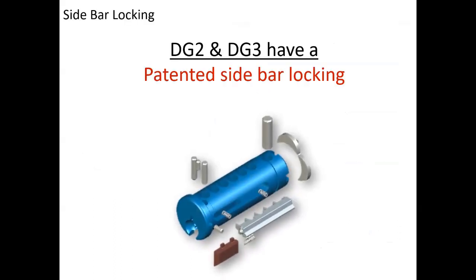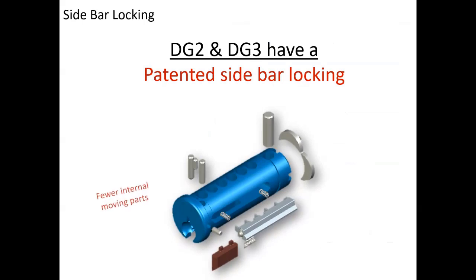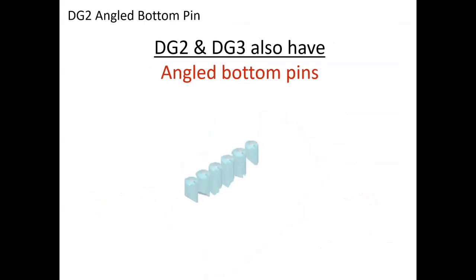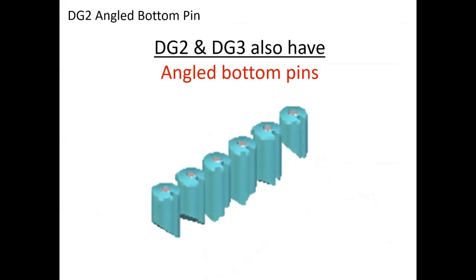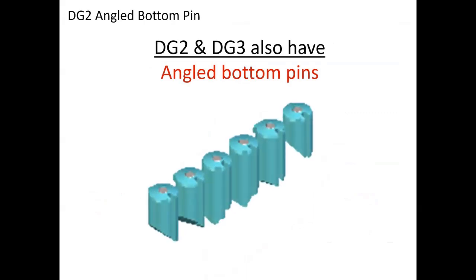Degree two and three cylinders are even more unique — higher security — where they have a sidebar and a slider, and the bottom pins are angled. That means the keys are cut with angled cuts: either center, left, or right, making a very unique cylinder and key system. It's not your father's key system, they would say.